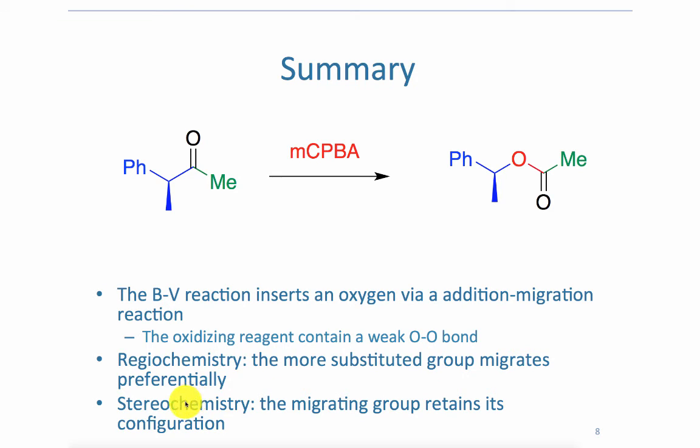In terms of stereochemistry, the migrating group retains its configuration. We saw the reasons for this when we looked at the orbitals involved in the reaction. Specifically, the HOMO of the migrating bond overlaps with the LUMO of the breaking oxygen-oxygen bond.